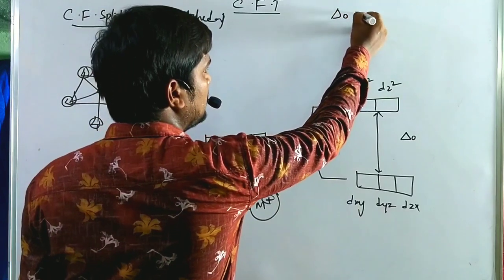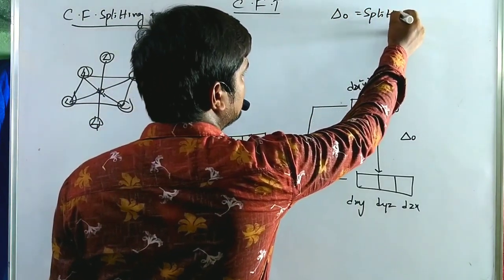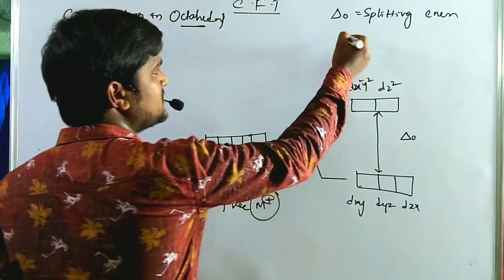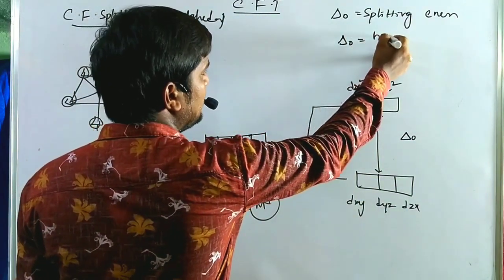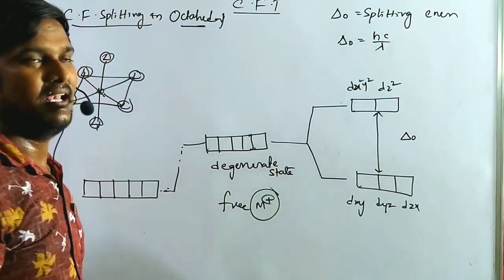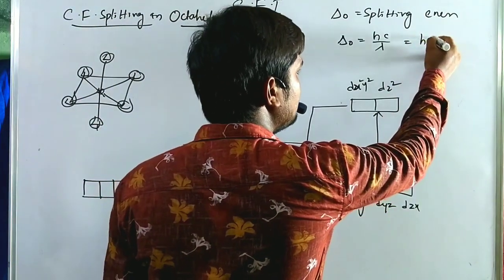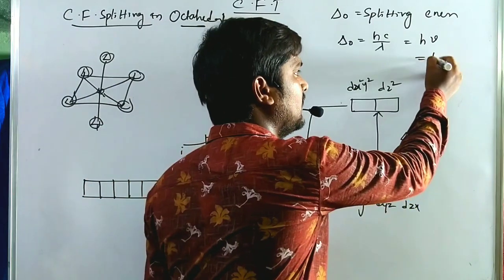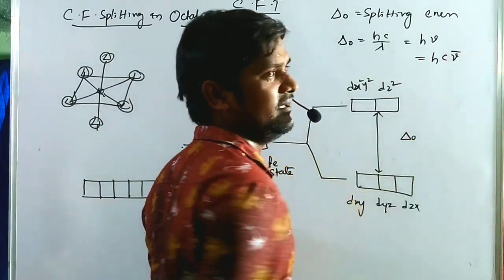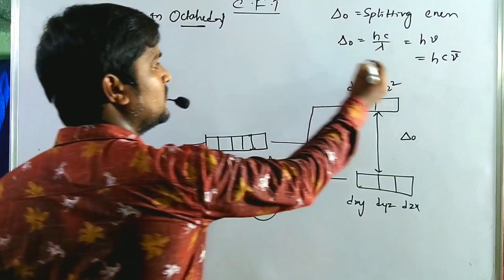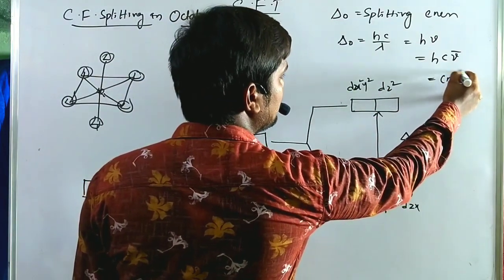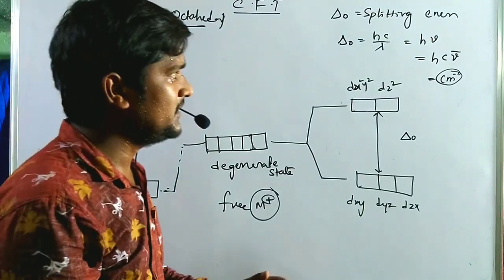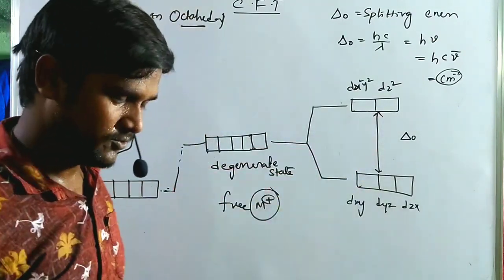The delta O energy is given by hc/λ, which equals hν, and since ν equals c·ν̄, delta O is calculated in units of cm⁻¹ (wavenumber units).